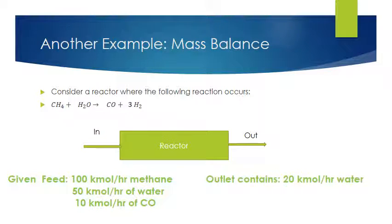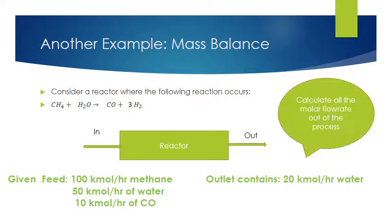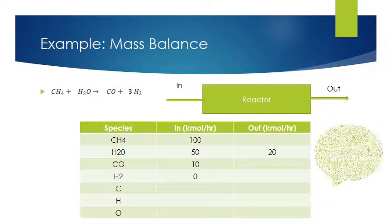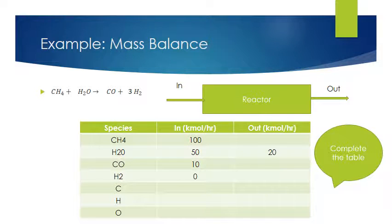We're now given a second problem where 20 kilomoles per hour of water is leaving the reactor, and we need to calculate all the molar flow rates out of the process. Set up the table with methane, water, CO, hydrogen, carbon, hydrogen, and oxygen. Put in the data we know: the flow rates of methane, water, CO, and hydrogen into the reactor, and 20 kilomoles per hour of water leaving. Pause the video and try the mass balance — the answer will be given on the next slide.